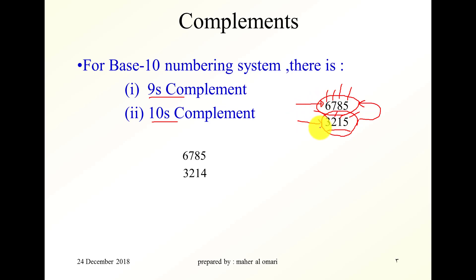Because if you want to find the 10's complement of the other number, it's 10 minus 5, which is equal to 5. It is 9 minus 1, which is equal to 8. It is 9 minus 2, which is equal to 7. And 9 minus 3 is 6.